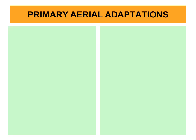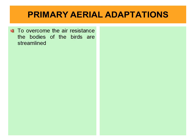Aerial adaptations are of two types: number one, primary aerial adaptations; number two, secondary aerial adaptations. Primary aerial adaptations are shown by the birds, whereas the secondary aerial adaptations are shown by the fishes, amphibians, reptiles, and mammals.